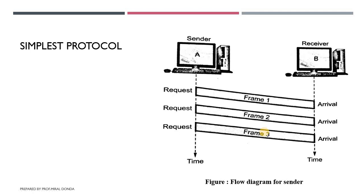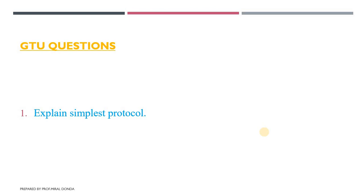The sender's work is to get data, make a frame, and send the frame. The receiver's work is to receive the frame, extract the data, and deliver the data. That is all about the Simplest Protocol. This topic is also asked in the GTU examination. Thank you so much for listening, have a great day.